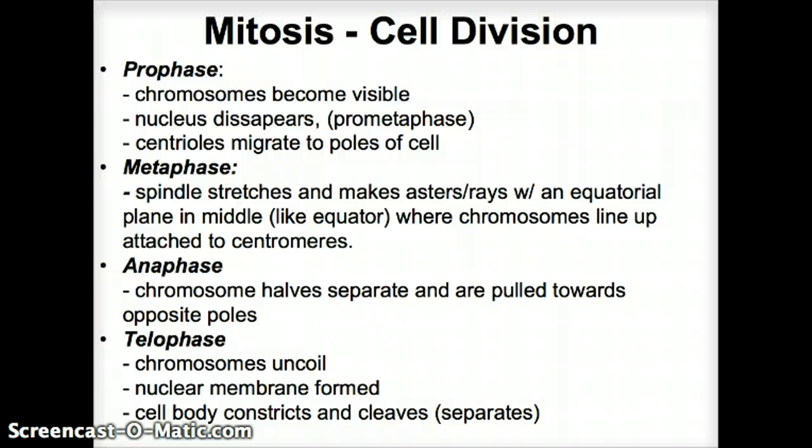In anaphase, the chromosomes separate and are pulled towards the opposite poles. In telophase, the chromosomes uncoil — it's kind of like prophase in reverse — the nuclear membrane is formed, and ultimately the cell bodies constrict and cleave, separating into two daughter cells.